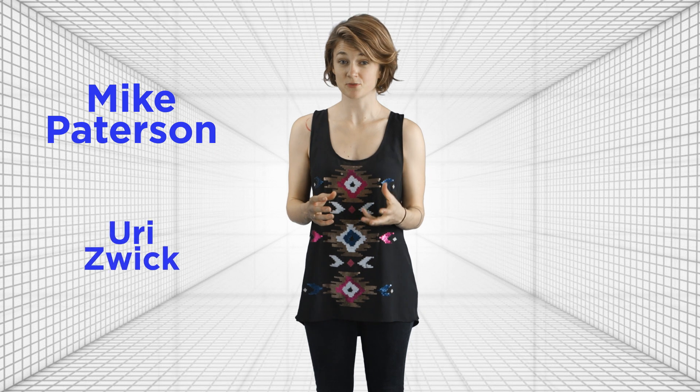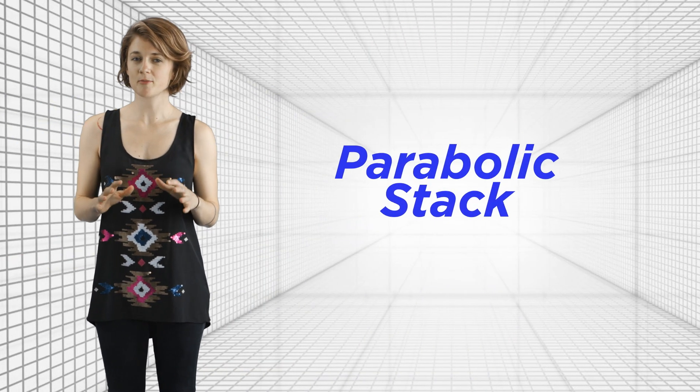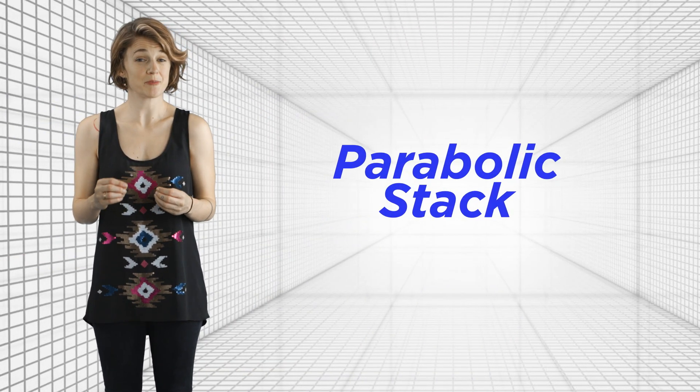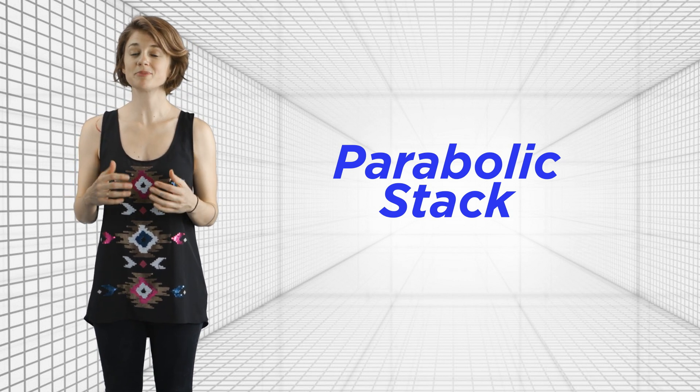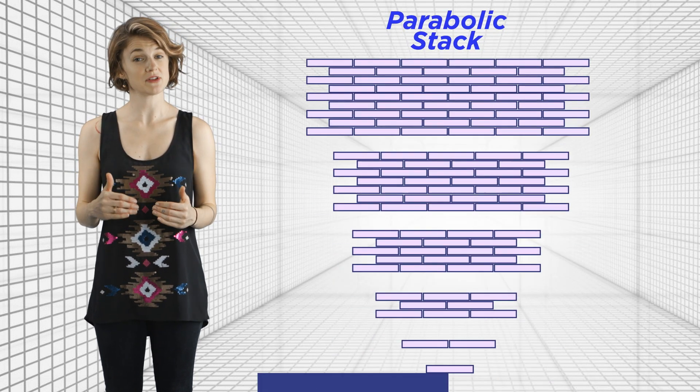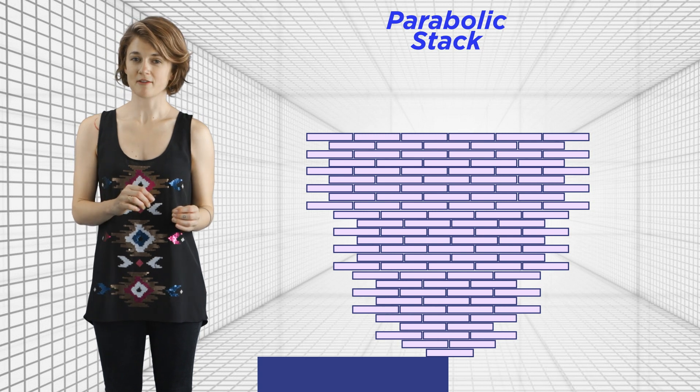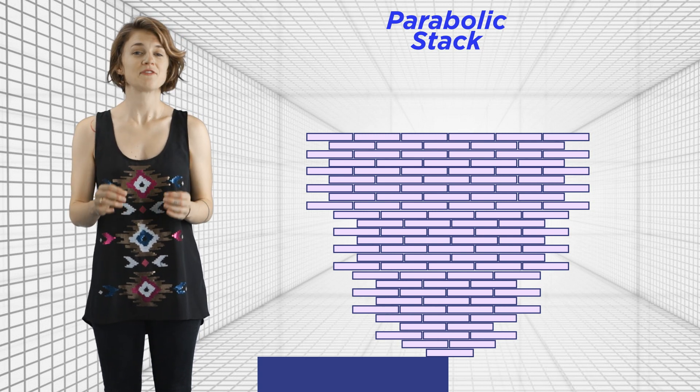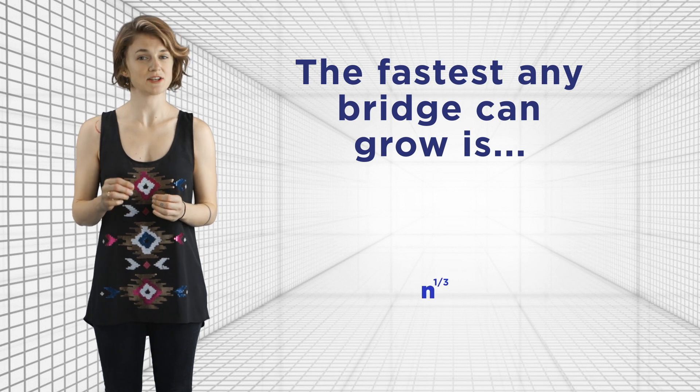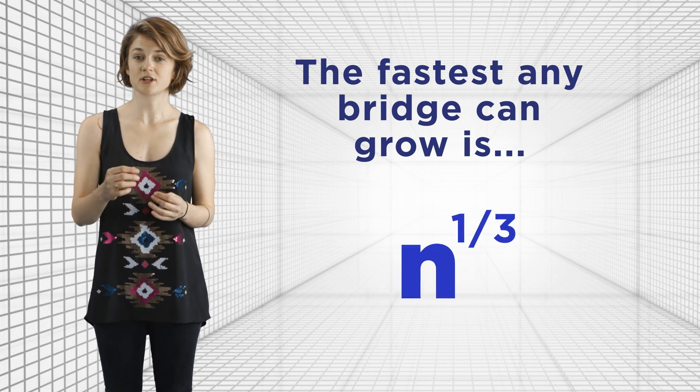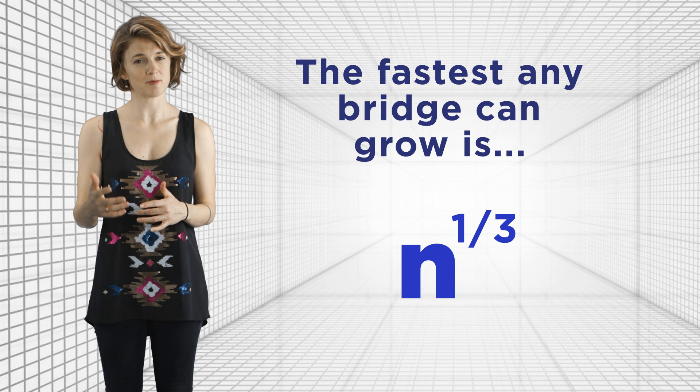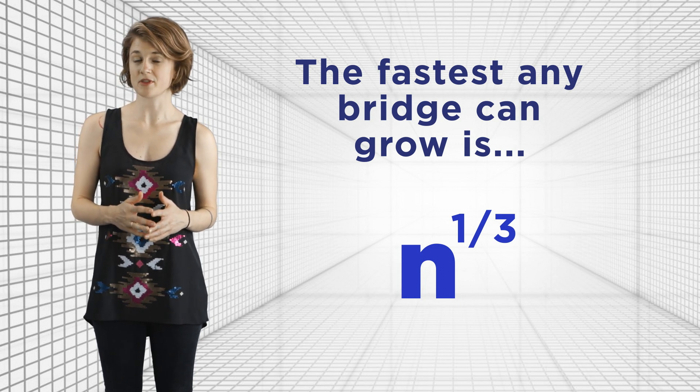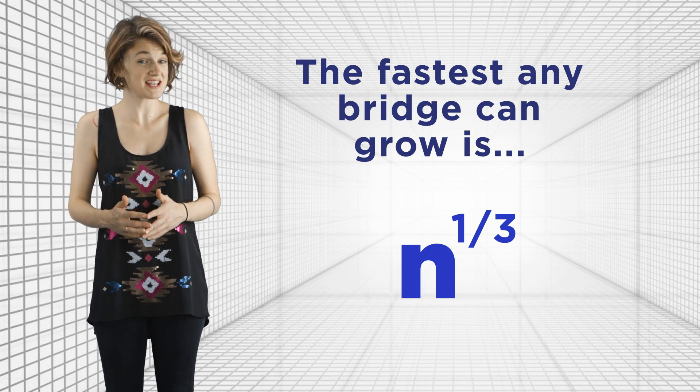Mathematicians Mike Patterson and Yuri Zwick created this super-fast bridge in a 2009 article. They called it a parabolic stack. You can't actually build the parabolic stack brick by brick. There are certain points where it would topple. But, you can build it in layers, like this. And it will be stable after each layer. Shortly after, they proved, along with some collaborators, that the fastest any bridge can grow is n to the one-third. The n to the one-third is multiplied by a constant number. And, in fact, you can make the constant bigger than the one for the parabolic stack above. But we only consider the term n to the one-third asymptotically. That is, as n gets big.